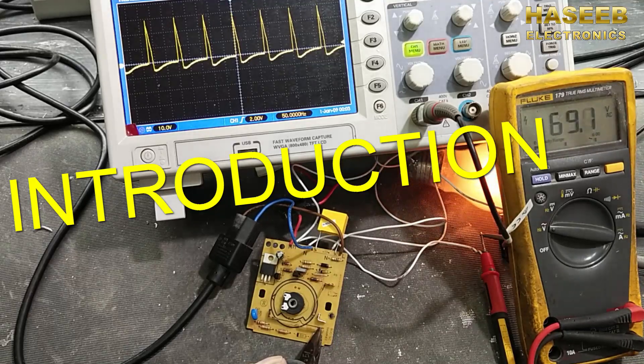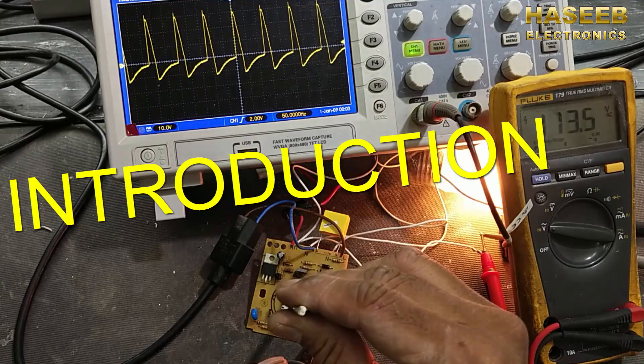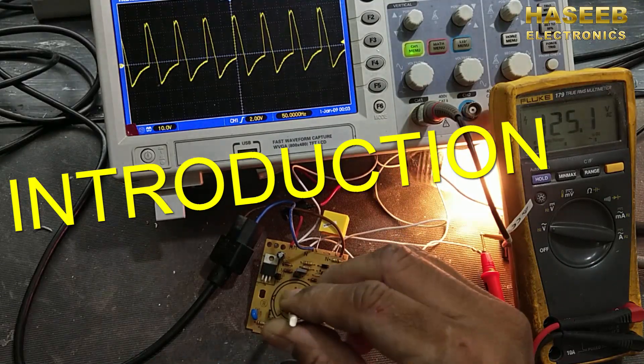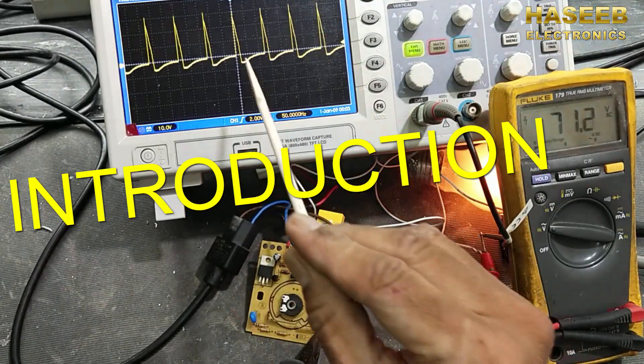Now we have this lamp on, it is dim. As we adjust the speed, the lamp is bright and we can see the voltage on the multimeter and we can see the wave shape.